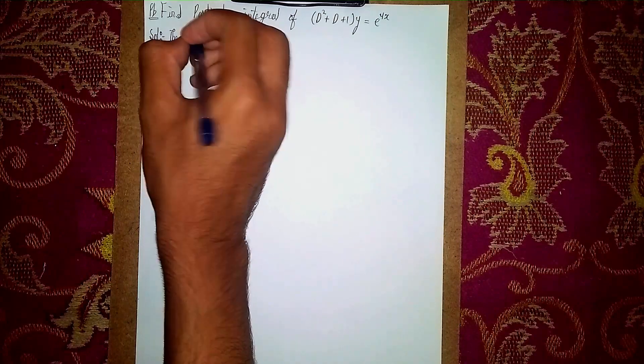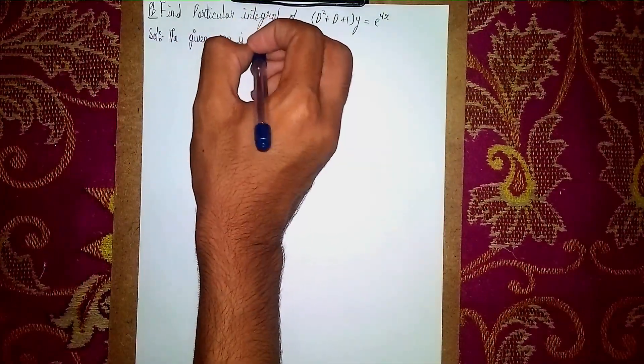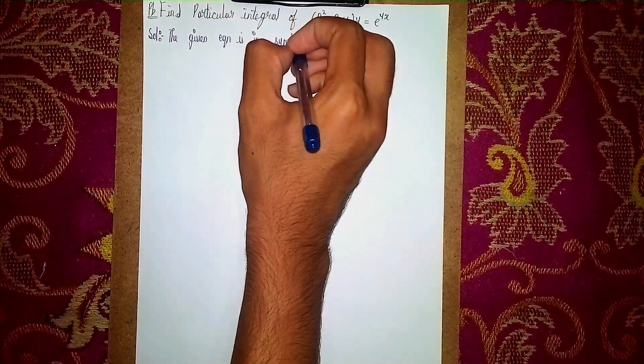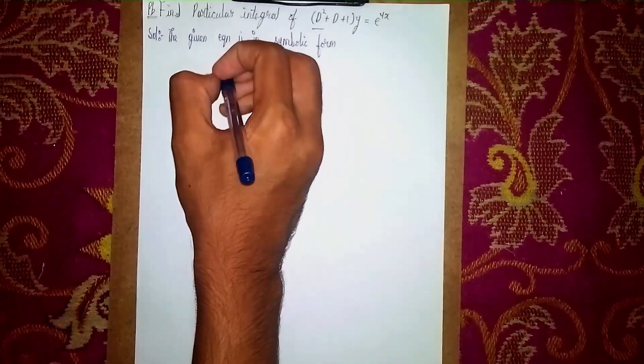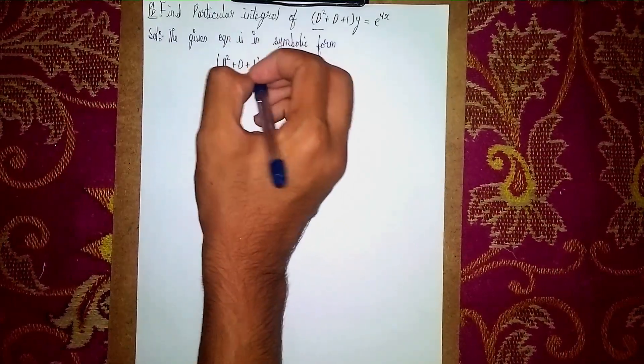First statement is: the given equation is in symbolic form. Symbolic form means D is a demon symbolic one. So write the first equation: d squared plus d plus one bracket into y equals e power 4x.